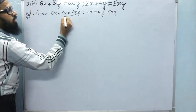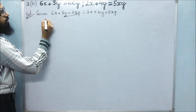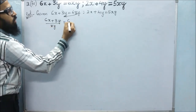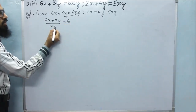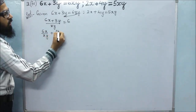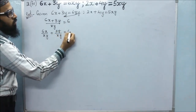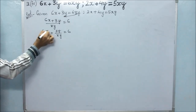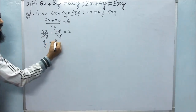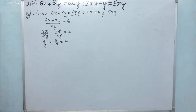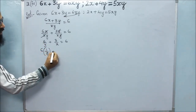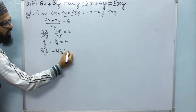Let us bring XY to the denominator on the left side. So 6x plus 3y divided by xy is equals to 6. Writing the terms separately: 6x by xy plus 3y by xy is equals to 6. Cancelling x with x and y with y, we get 6 times 1 by y plus 3 times 1 by x is equals to 6.